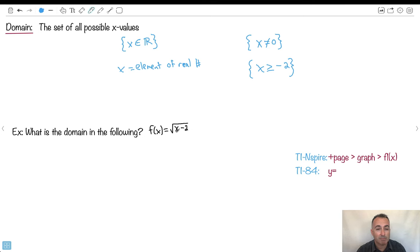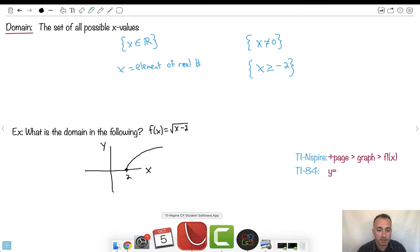For example, what's the domain in the following? Let's say I've got f(x) equals square root of x minus 2. If you know about transformations, you could have seen this as square root of x. I know what graph of square root of x looks like. It's a graph like this. And if I want x minus 2, that would mean we move it to the right by 2. So here is 2.